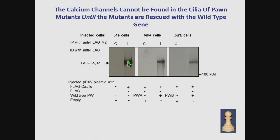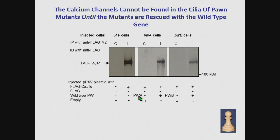But when he transforms with flag-tagged channel and immunoprecipitates, then you find this very nice channel — very large, about 270 kD. When he turns to Poin-A cells or B cells, in each case he's transformed with the flag-tagged channel, so they all have the opportunity to have a channel. This is the control: the flag-tagged channel and just an empty vector, and he cannot precipitate the channel from the cilia. But when he brings in and transforms with a wild-type version of the Poin-A gene — so you have both the channel and the Poin-A gene — then you can immunoprecipitate this channel from the cilia. The same with Poin-B: the control shows nothing, and when you doubly transform, you can find the channel.